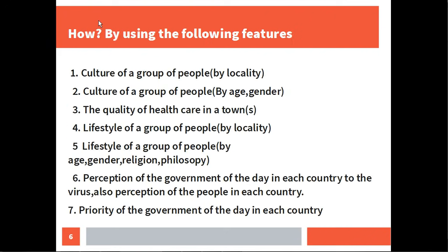How do we achieve this? We can achieve this by using the following features. Number one: consider the culture of a group of people by locality. Number two: the culture of a group of people by age or gender.